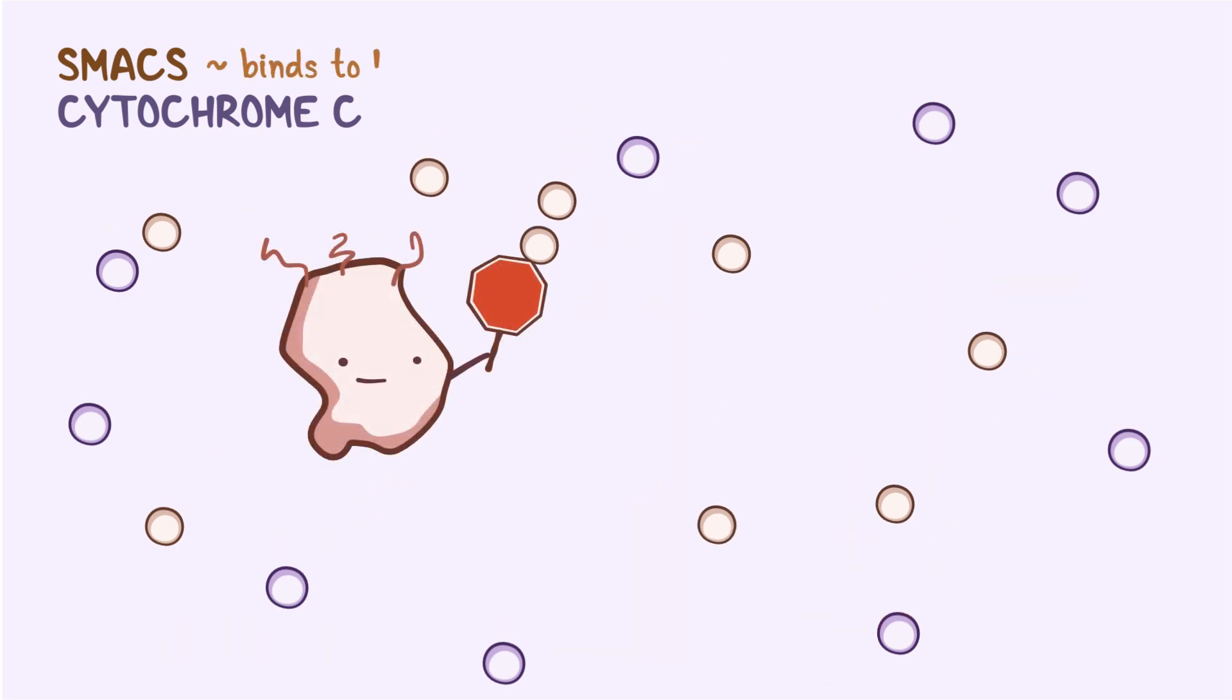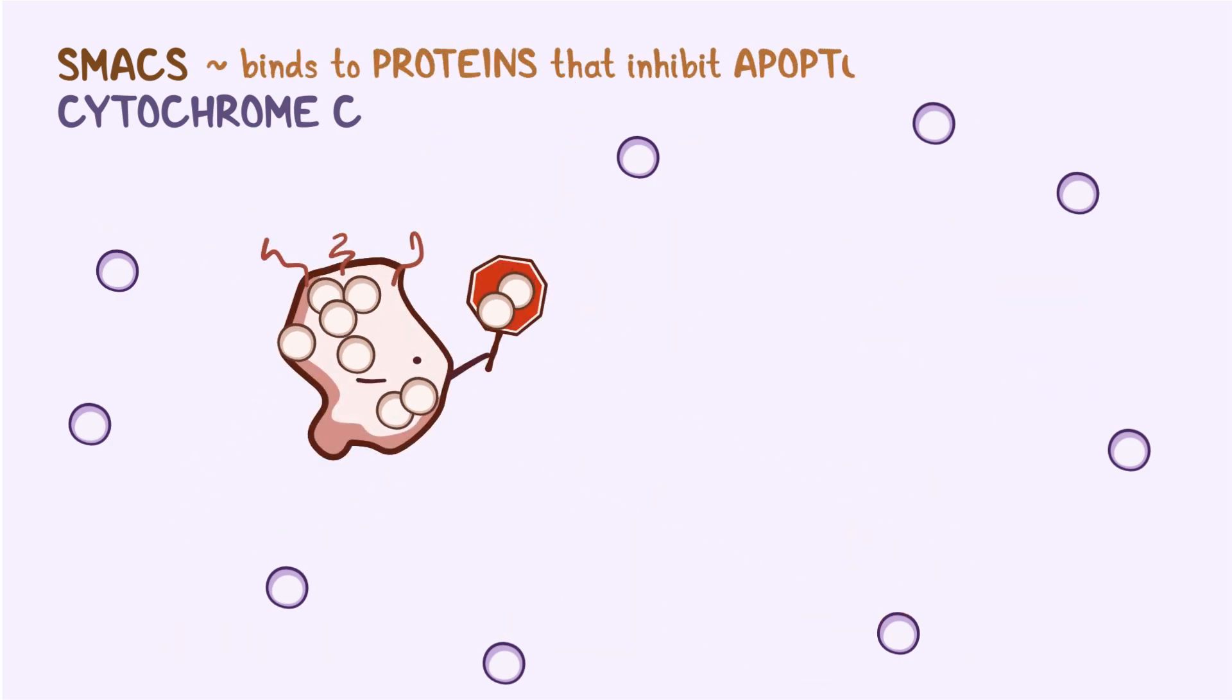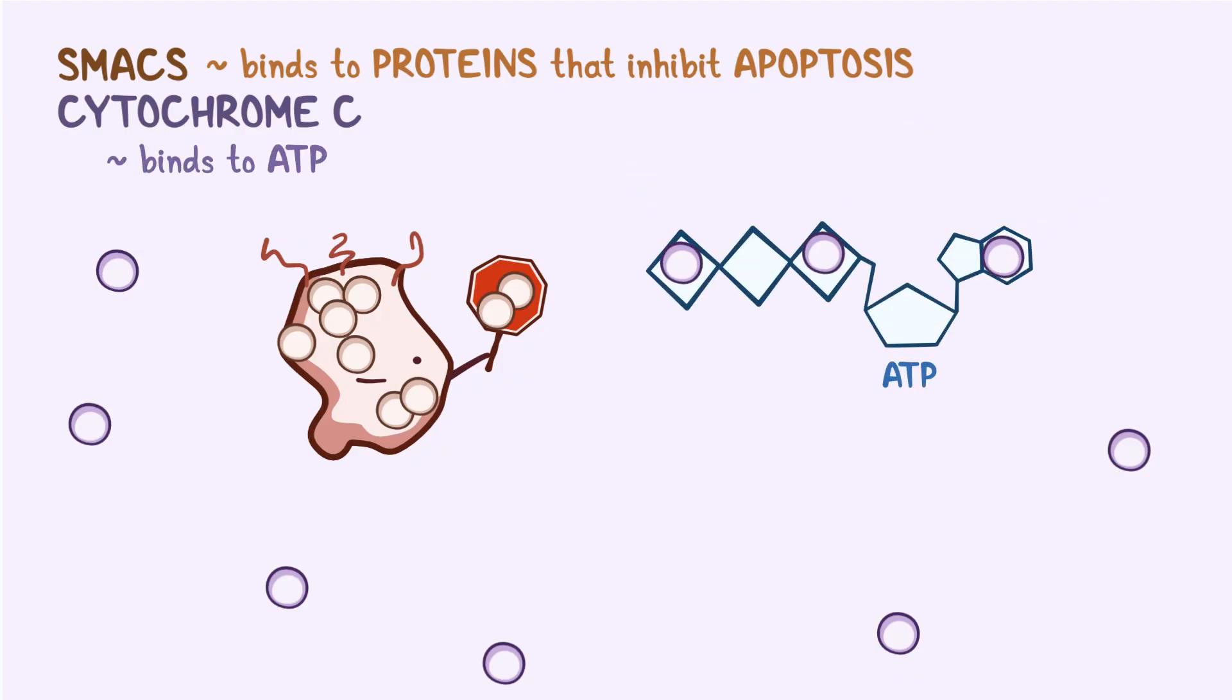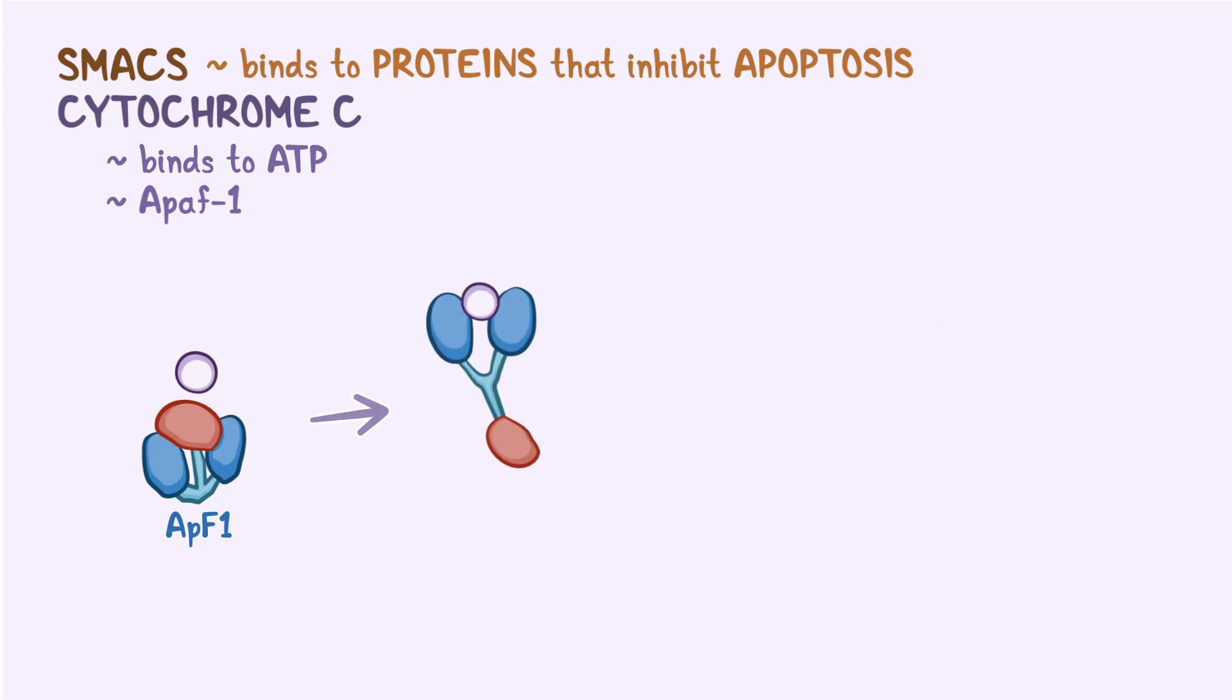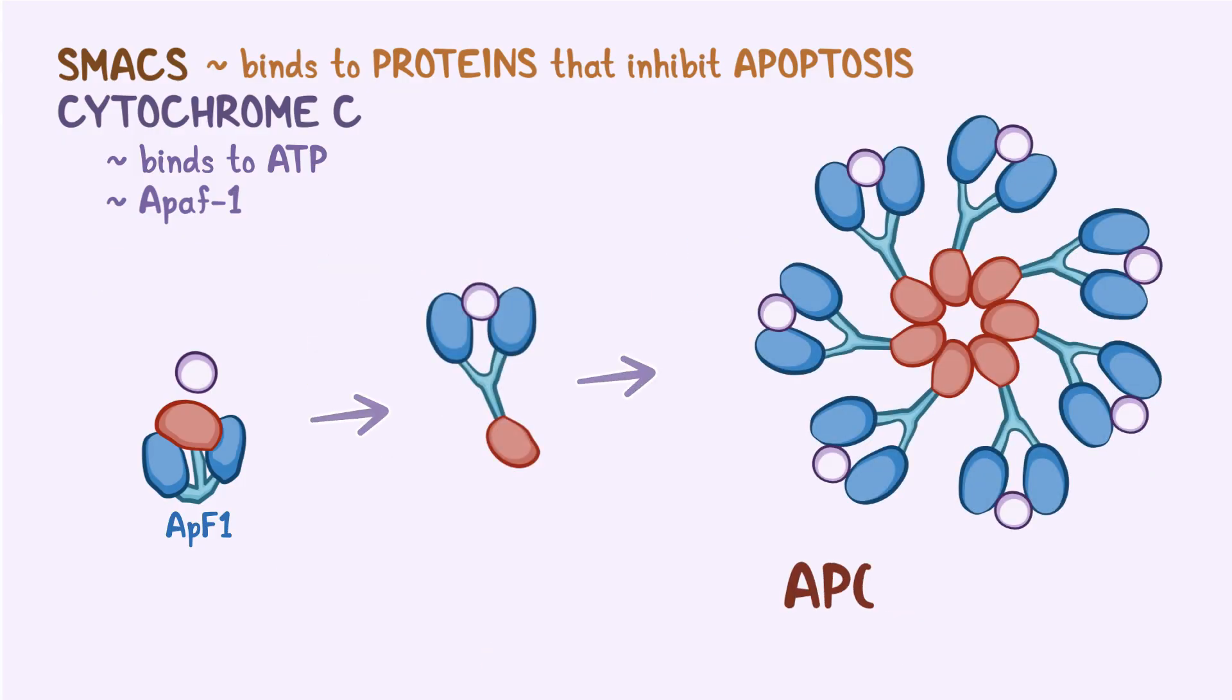SMAC binds the proteins that normally inhibit apoptosis and deactivates them. Meanwhile, cytochrome C binds to both ATP, the main form of intracellular energy, as well as an enzyme called APAF-1. Together, cytochrome C and APAF-1 combine to form a large protein complex called apoptosome.